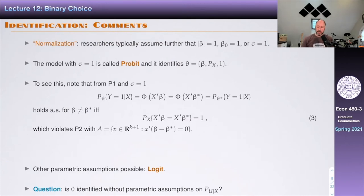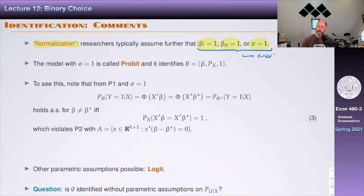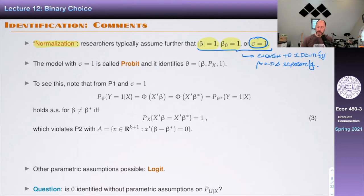What do we do about this? Typically people use a normalization. Options include assuming the norm of beta is one, assuming a slope coefficient of beta is one, or assuming sigma is one. The model with sigma equal to one is called the probit. In that case, theta is just beta and P of X, and the model is identified. There's another model called the logit, which replaces assumption P1 with the assumption that U given X follows a logistic distribution. Going through the same proof gives identification in the logit case as well.